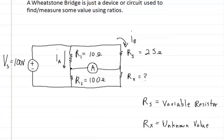So what you're going to use to solve for it is this equation. You're going to say the voltage on R2 divided by the voltage on R1 is equal to the voltage on Rx divided by the voltage on RS. And you're going to use these ratios in order to solve for Rx.